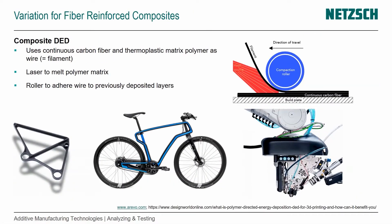A variation of this process can be used with fiber-reinforced composites, called composite DED. The schematic for the process is on the top right — you have an incoming filament that's a continuous carbon fiber with a thermoplastic polymer, which in DED would be called the wire, but here we call it a filament.